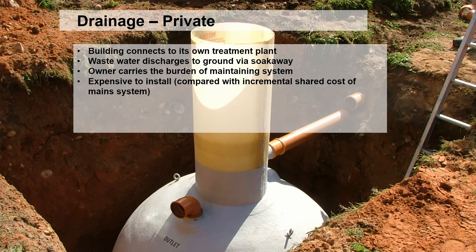If you're not connected to mains drainage, you typically need a septic tank or, more likely these days, a treatment plant. This is effectively a large plastic bulb-shaped tank buried in the ground. Waste enters one side, sits in the tank, and bacteria break it down. The cleaner water rises to the surface and flows out through an outlet pipe, usually going to a soakaway system. These can be expensive to install and require ongoing maintenance — someone must come and pump out the slurry at regular intervals.